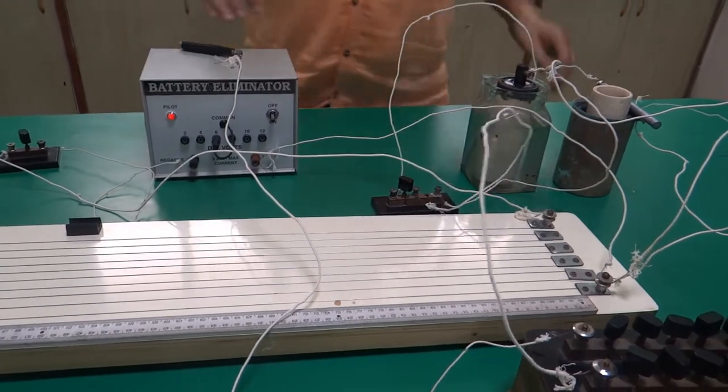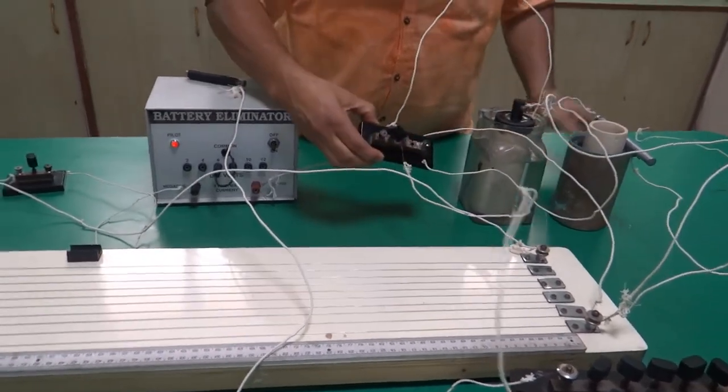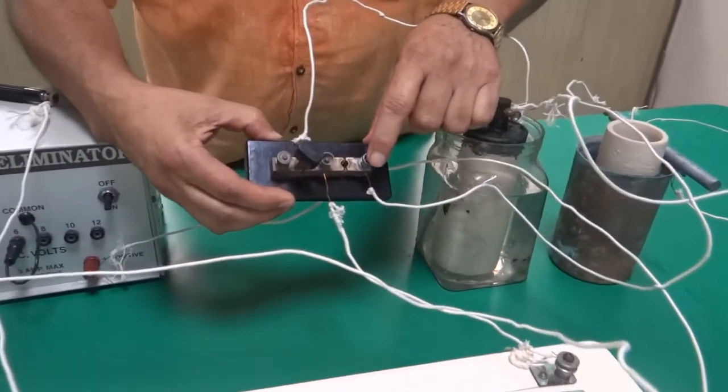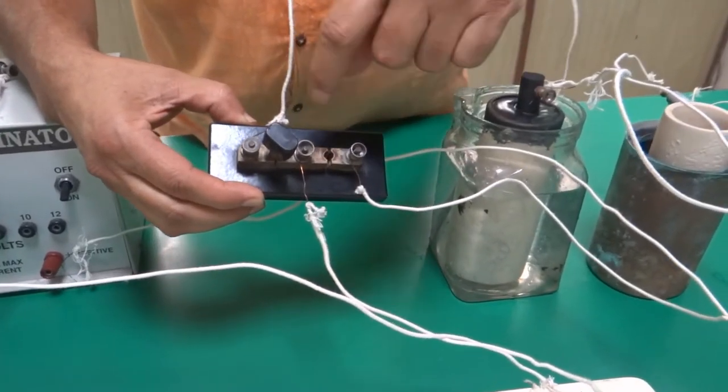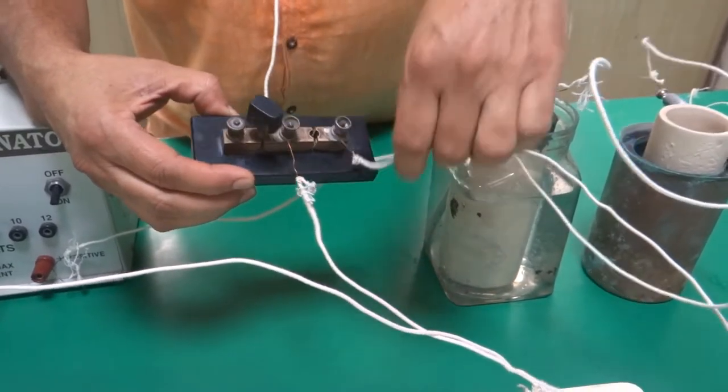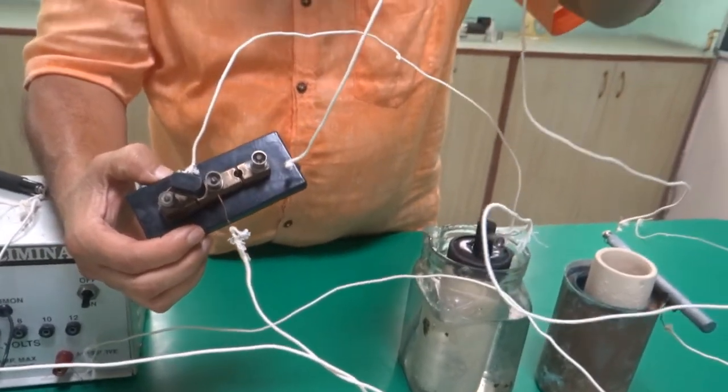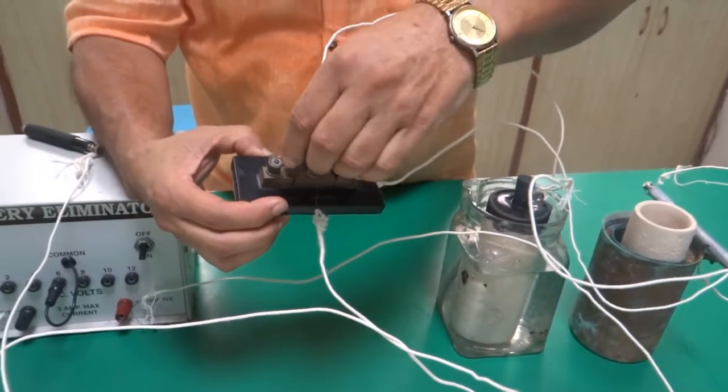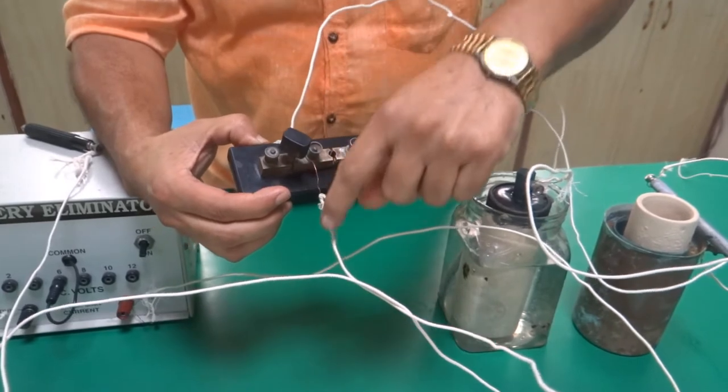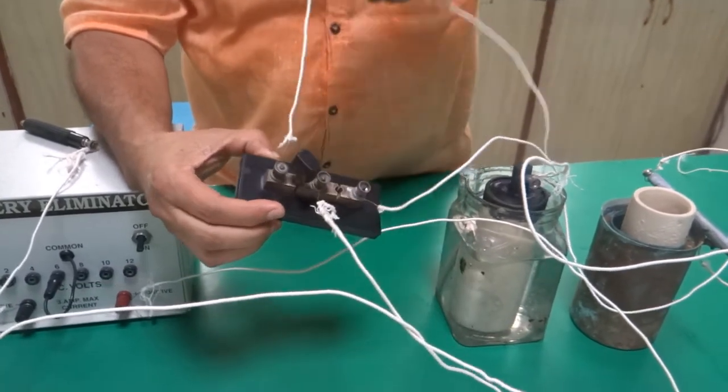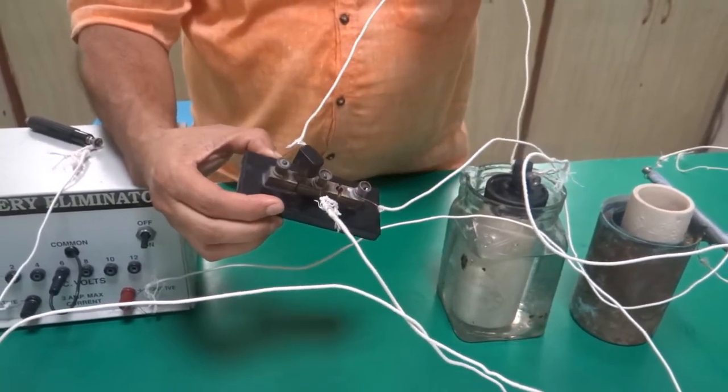These two cells are connected with two-way keys. You can see the two-way key has three terminals. When we plug in this side, this will connect your cell, the Daniel cell. When I plug the key this side, then this connects the Leclanche cell.